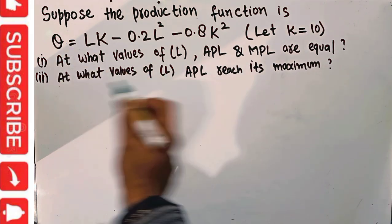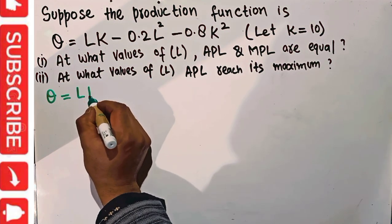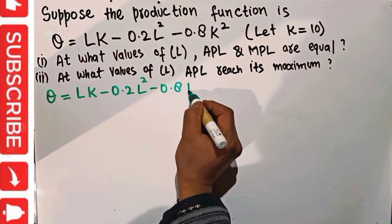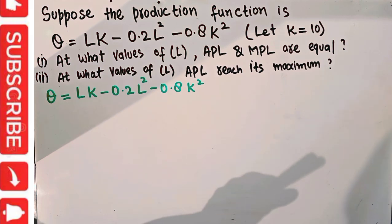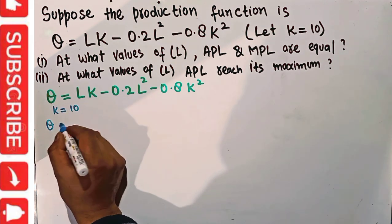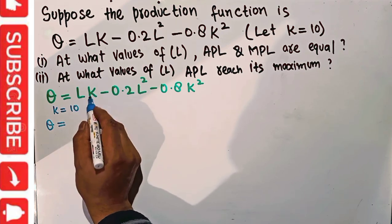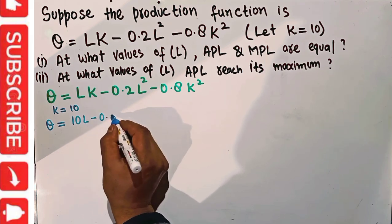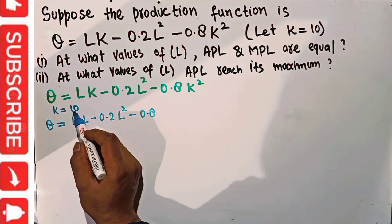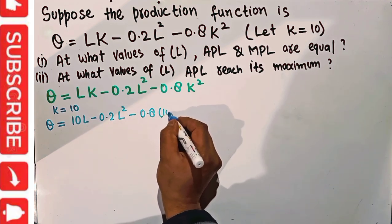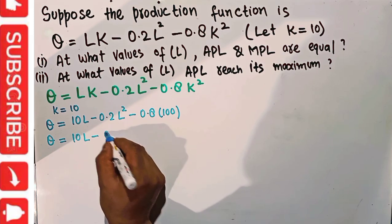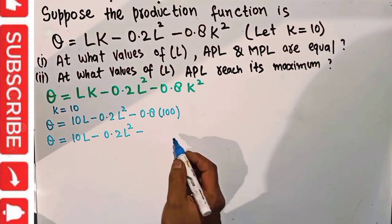We have the production function Q = LK − 0.2L² − 0.8K², and we are told that K = 10. Substituting K = 10, the production function becomes Q = 10L − 0.2L² − 0.8 × 10², which gives Q = 10L − 0.2L² − 80.